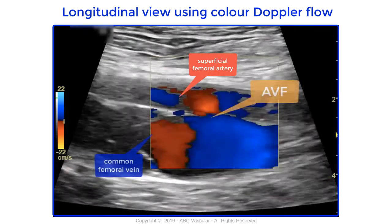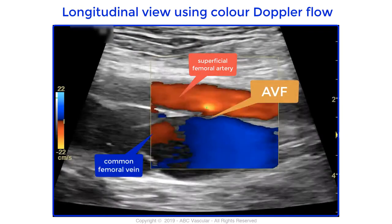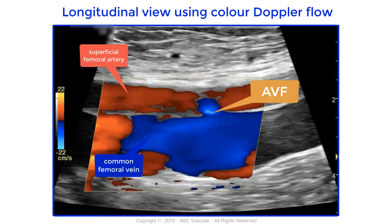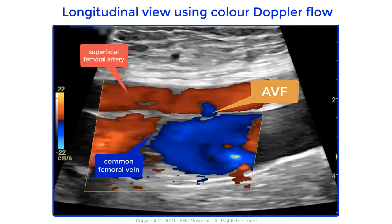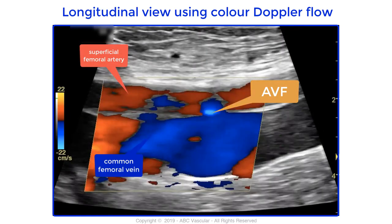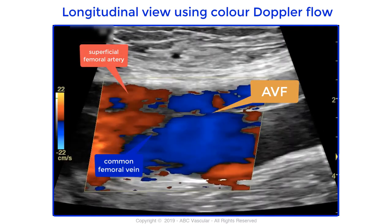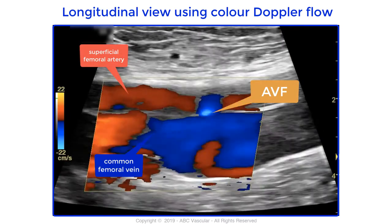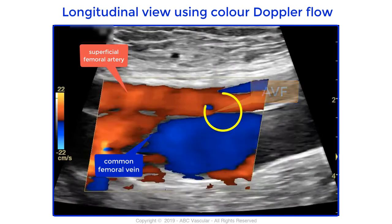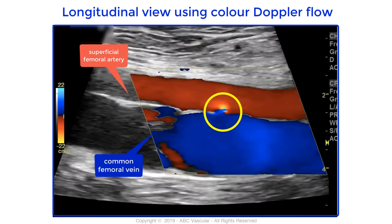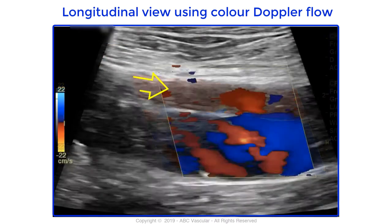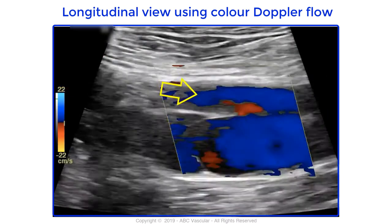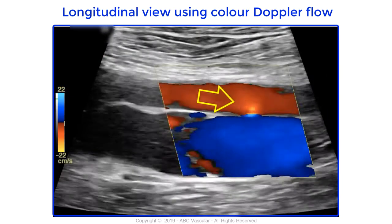A communication between these two vessels via an arteriovenous fistula is demonstrated. The arteriovenous fistula is detected using color Doppler flow by the presence of color Doppler flow aliasing at this level.